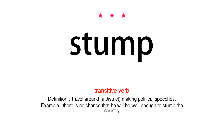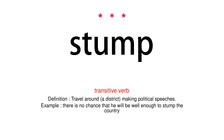Transitive verb. Definition: Travel around a district, making political speeches. Example: There is no chance that he will be well enough to stump the country.